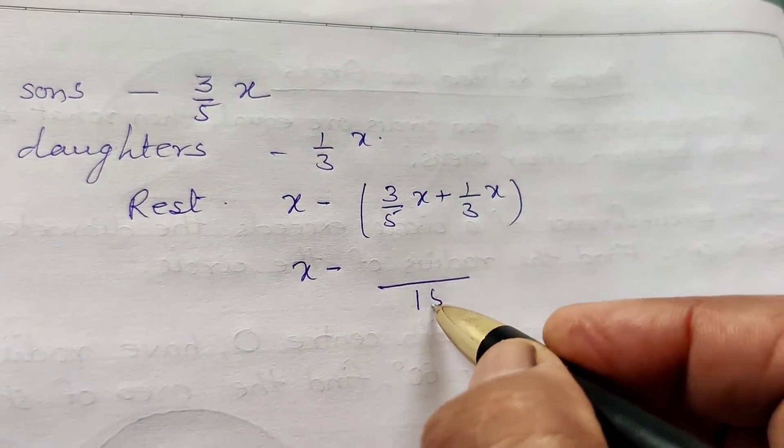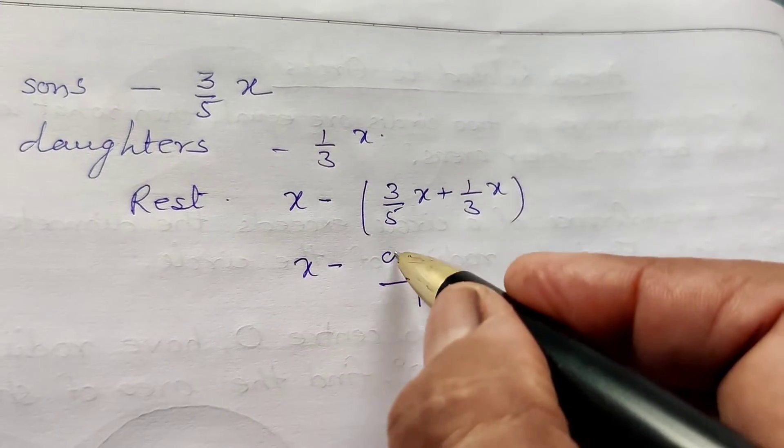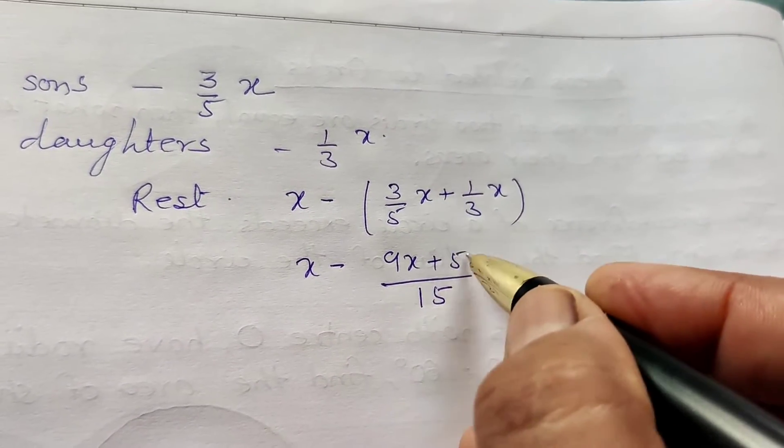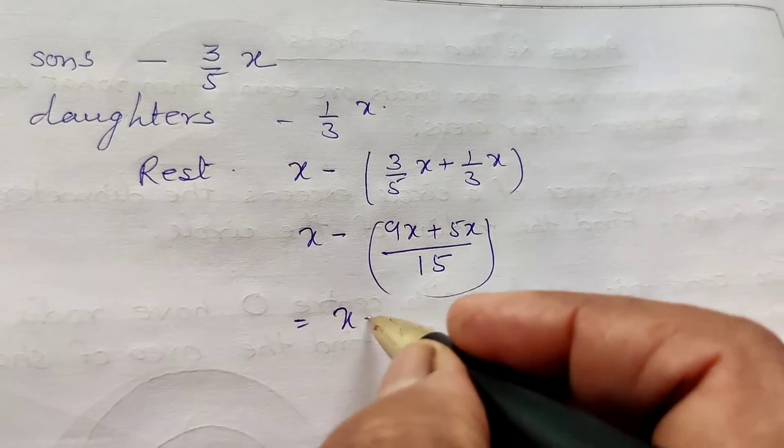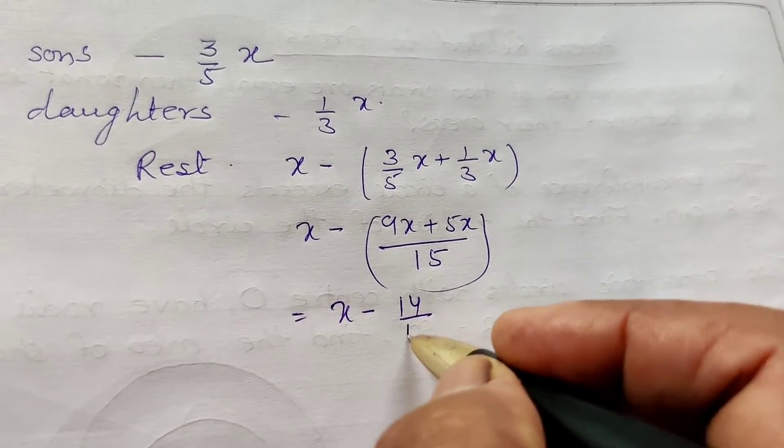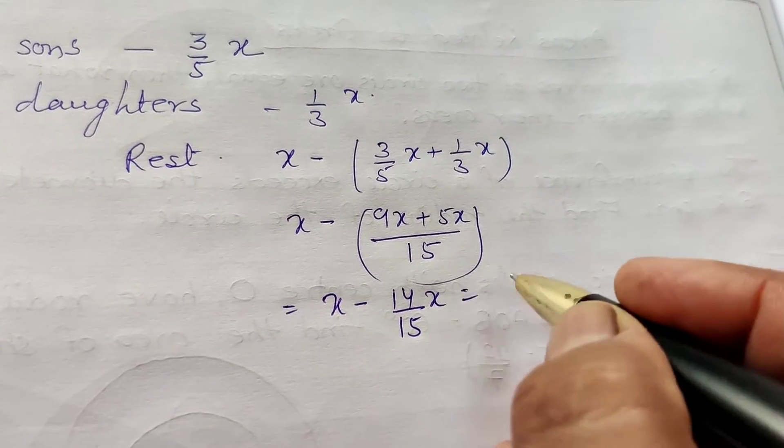The rest for the charitable trust is X minus (3/5X plus 1/3X). Now subtract, take LCM 15.